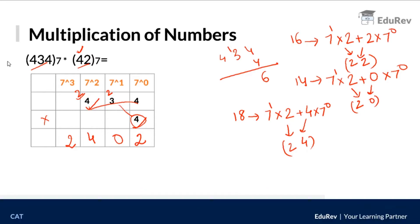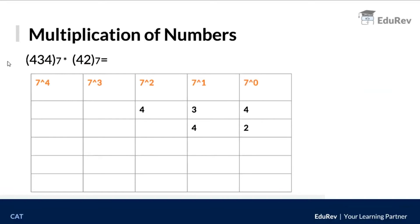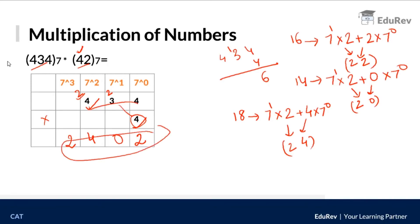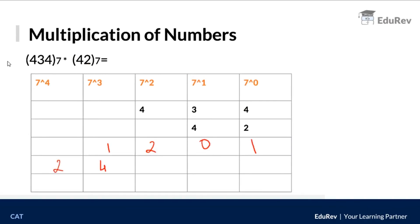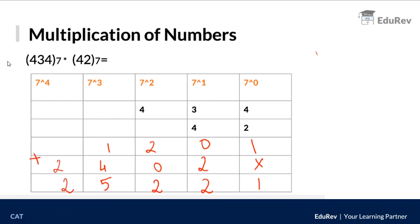Now we add the two partial products. The first partial product was 1201, and the second was 2402, shifted one place to the left. Adding them together: 1, then 2, then 2, then 5, then 2. So the product of 434 and 42 in base 7 is 25221 to the base 7. This is the final answer.